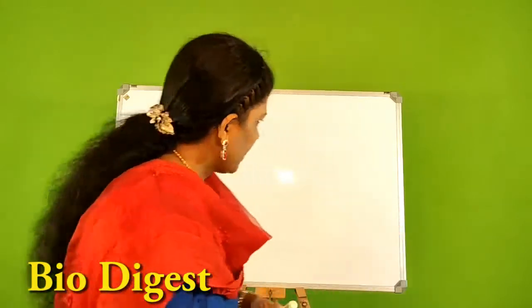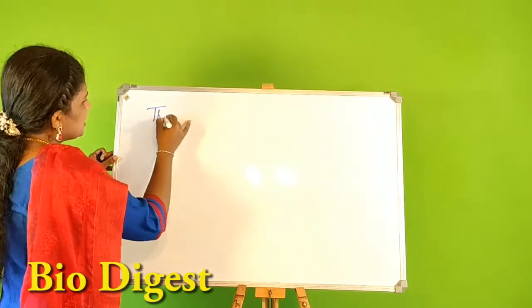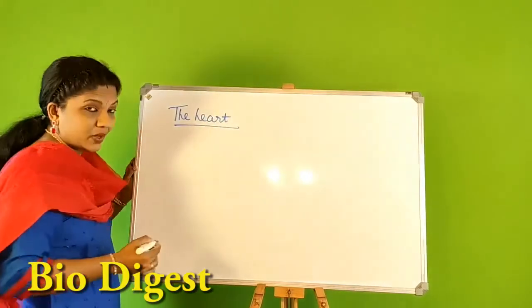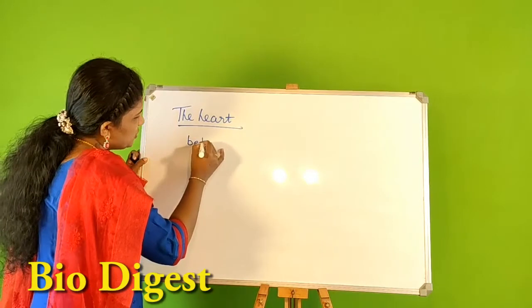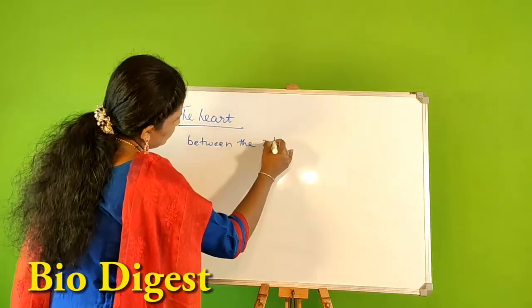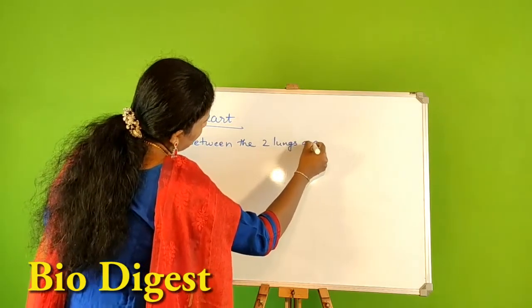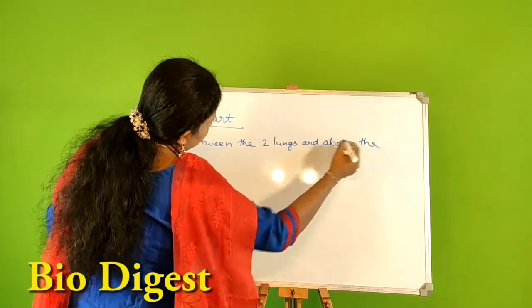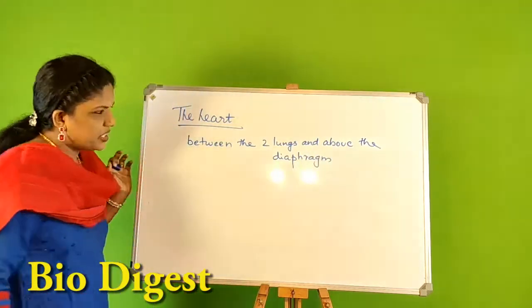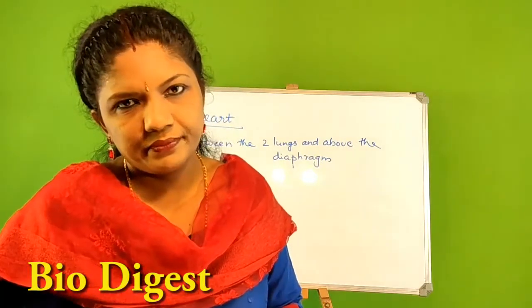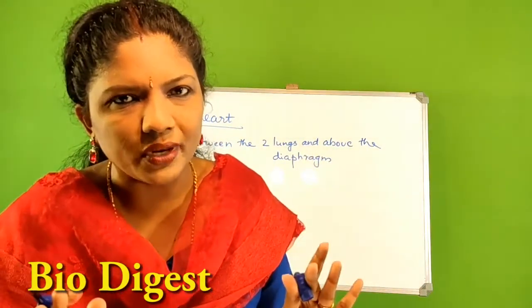Today in this video, we are going to discuss about the heart. Please do watch my previous videos for more details related to the circulatory system. Let us discuss where the heart is located — location is very important for the board exam. The heart is located between the two lungs and above the diaphragm. This is the correct location you have to write for board exams.